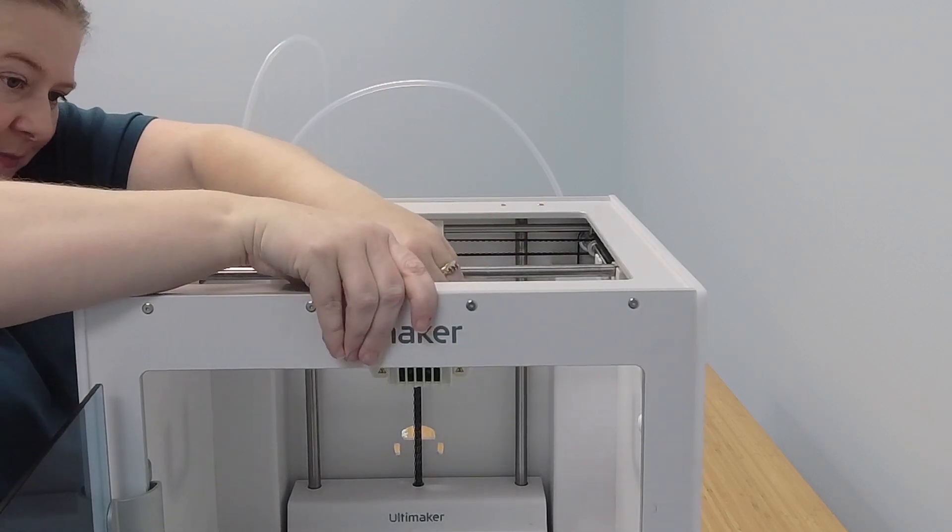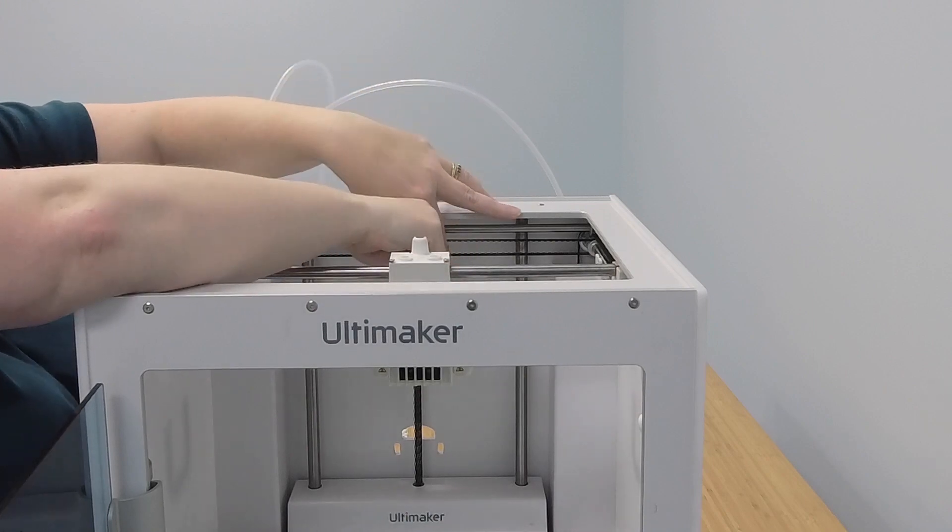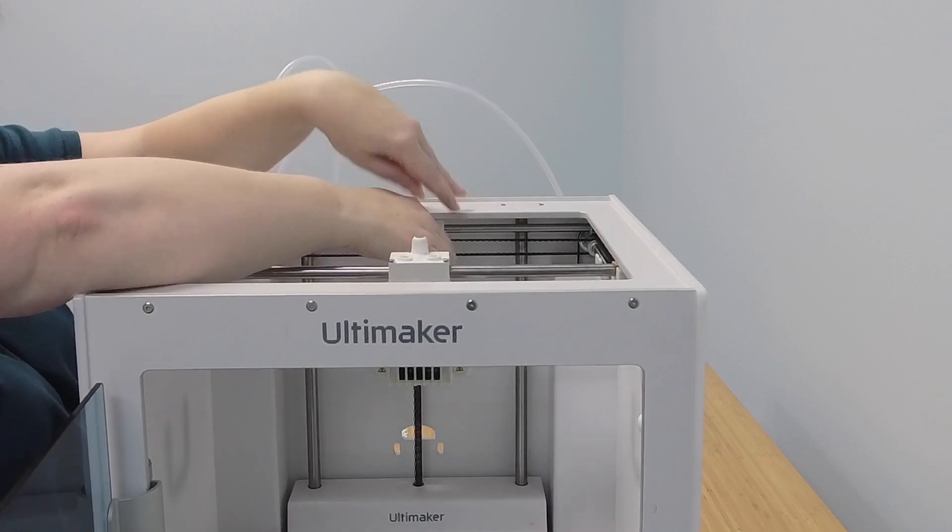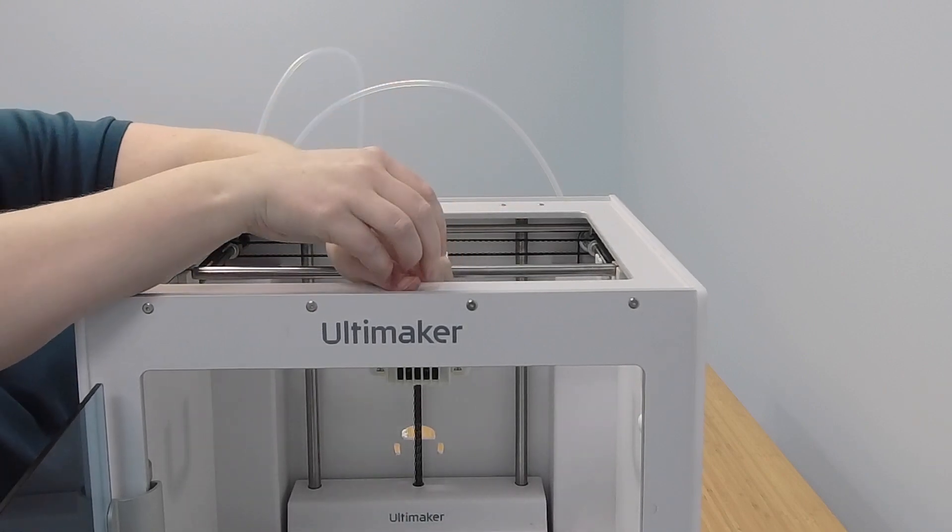As a reminder, if you're working on an Ultimaker S5, make sure to have the printhead off center at this point so the printhead shaft doesn't catch on the magnet.